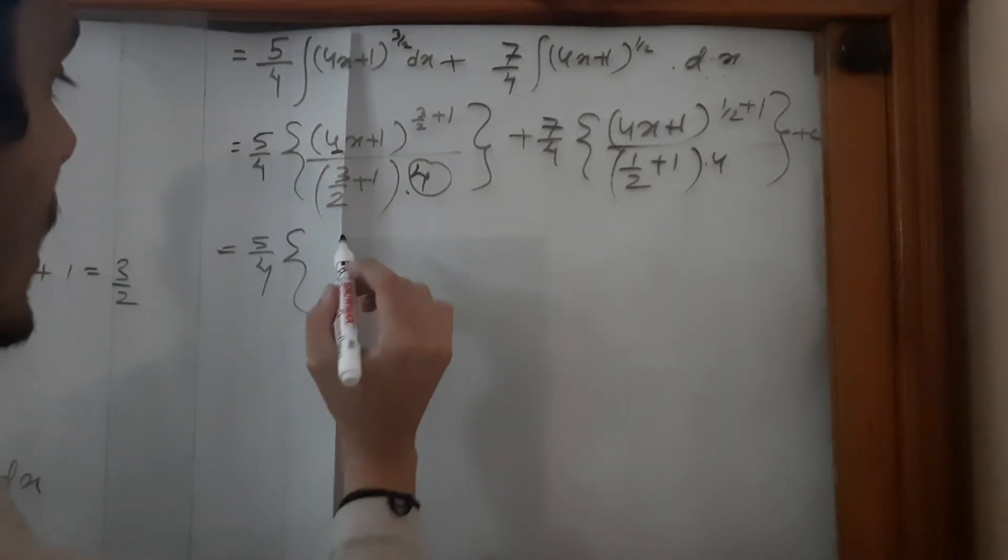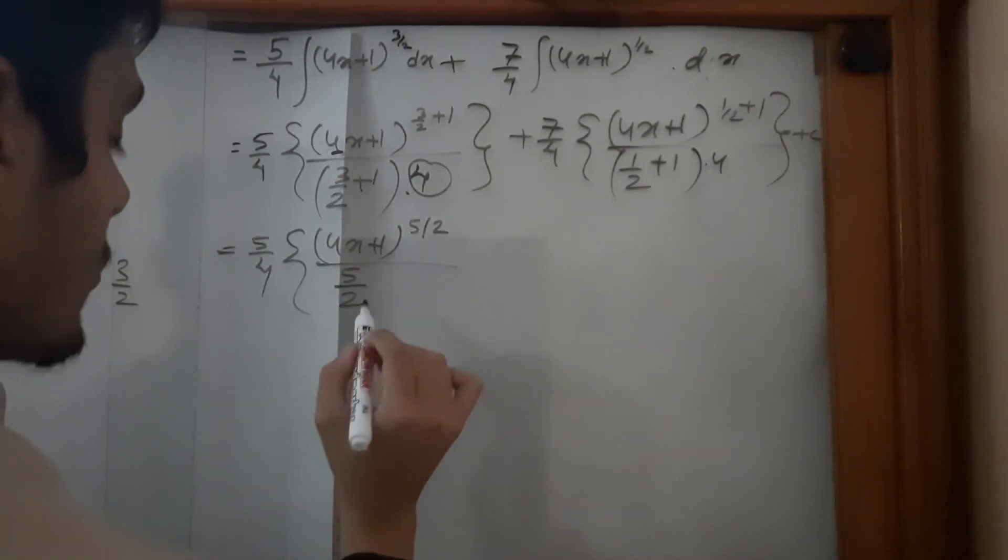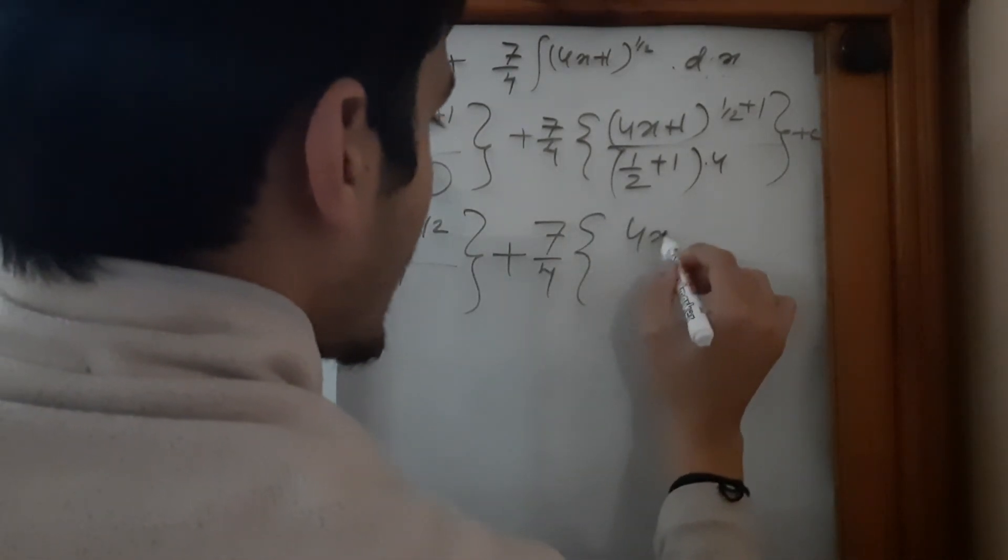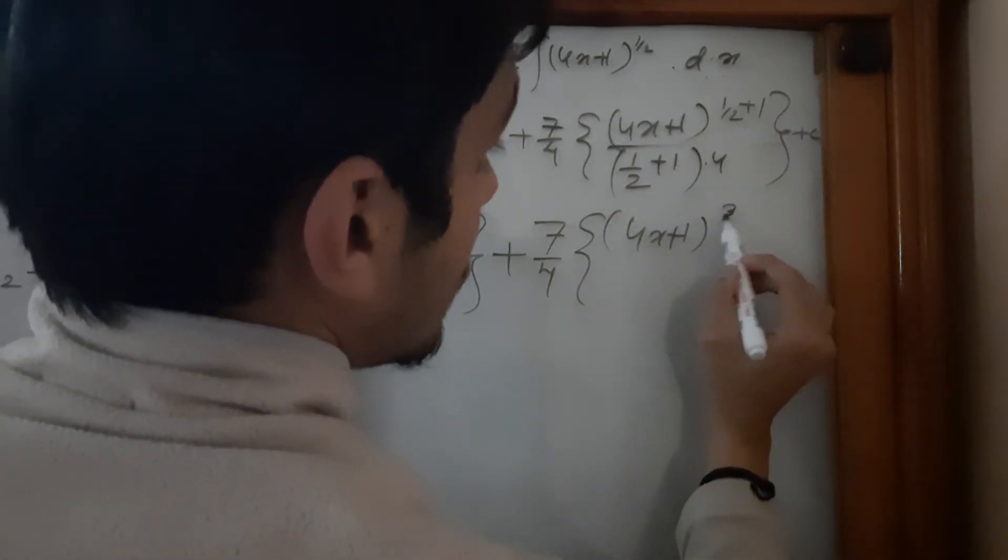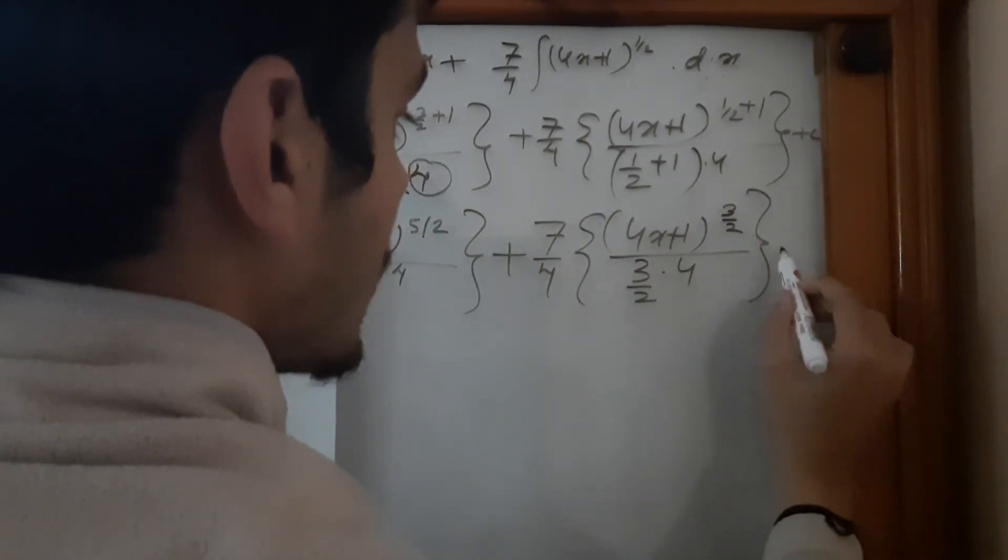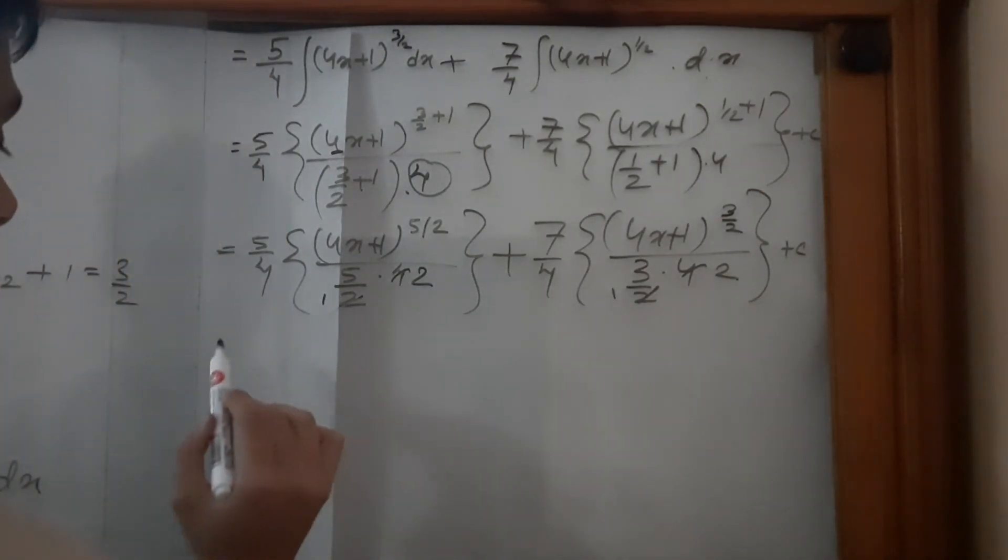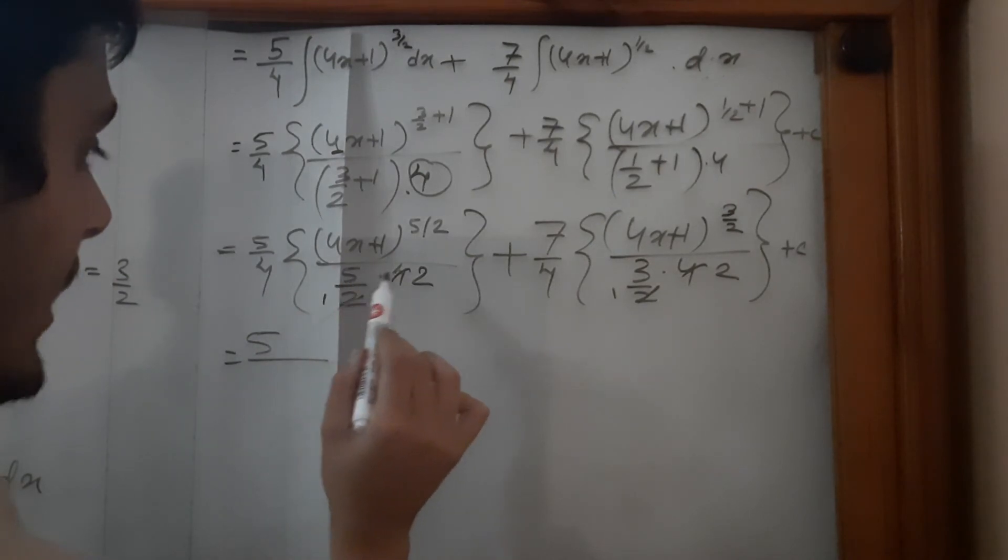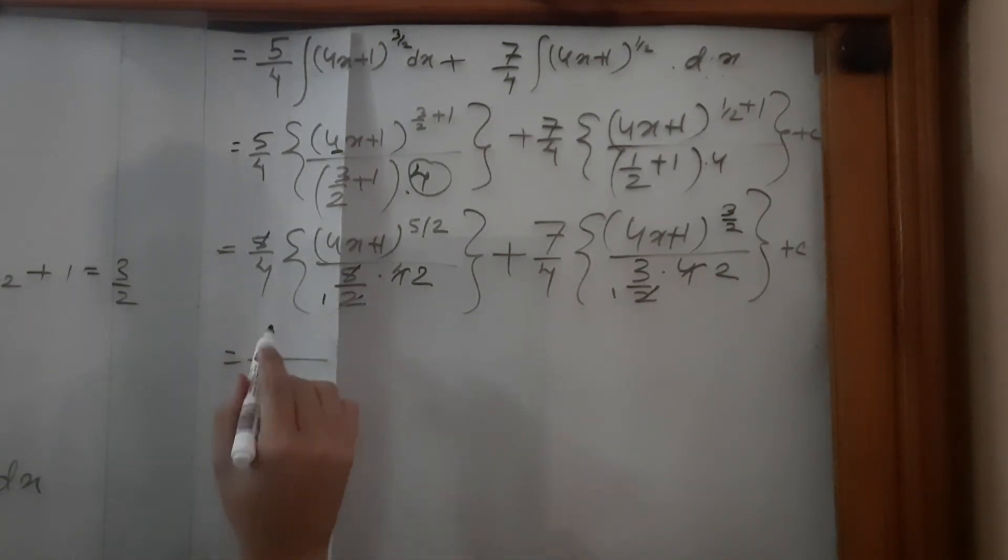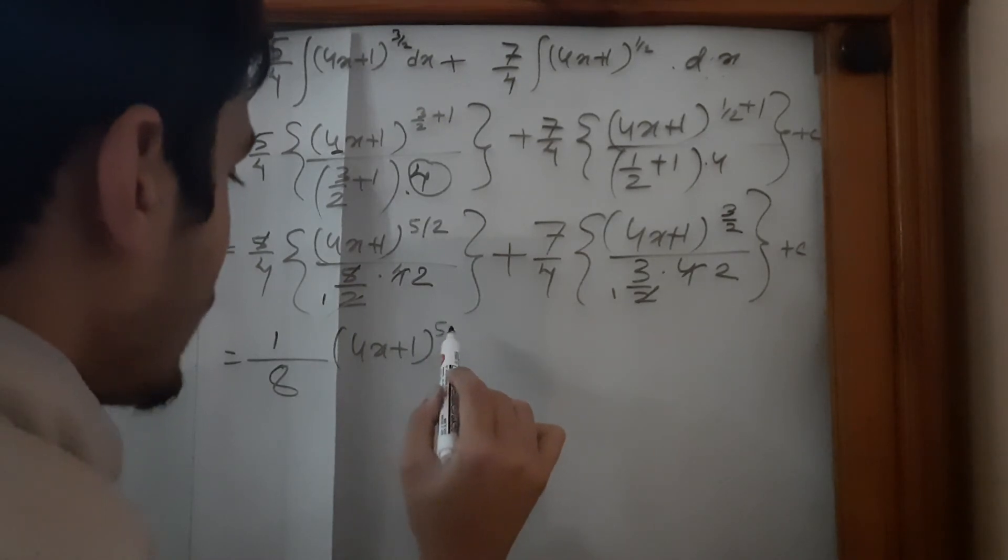So it is (4x + 1)^(5/2), this is 5/2 as well, times 4 plus 7/4 times (4x + 1)^(3/2), this is 3/2. And then this also is 3/2 times 4, close the curly bracket plus the integration constant. This is 1, this is 2 of course. This is 5/4 times 5 times 2, but this 5 can cancel this. So let's write 1 over here, 4 times 2 is 8. And then (4x + 1)^(5/2) plus...